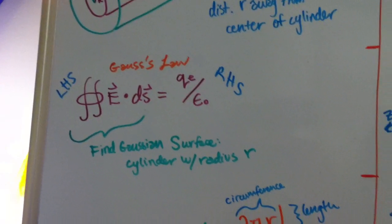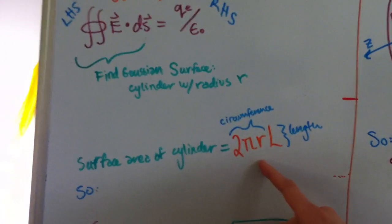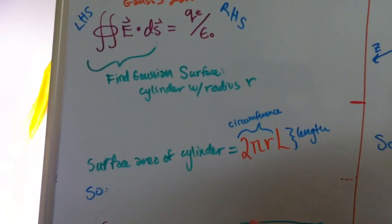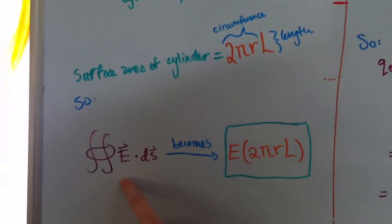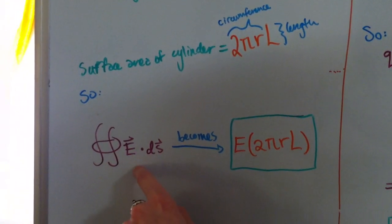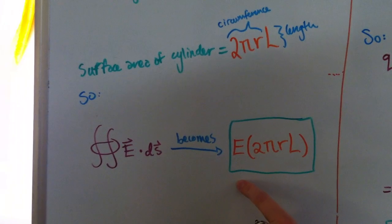So, now remember the surface area of a cylinder is 2πRL, circumference times length, real easy, and so our left-hand side of Gauss's law becomes E times 2πRL, and there's the left-hand side.